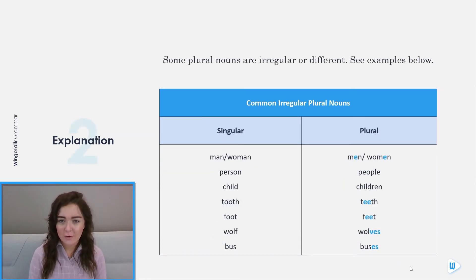Some plural nouns are irregular or different. See examples below. Singular: man or woman turns into men or women. Person becomes people. Child turns into children. Tooth becomes teeth. Foot becomes feet. Wolf becomes wolves. And bus becomes buses.